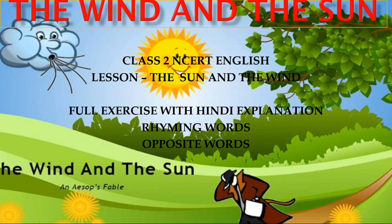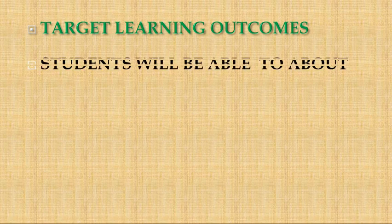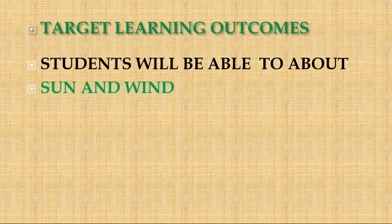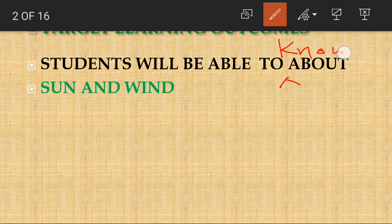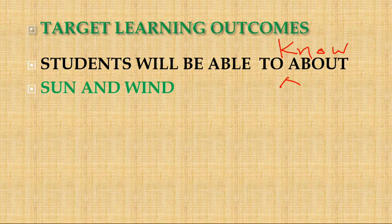The Wind and the Sun — this is the lesson of Class 2 NCERT English Unit 3. First of all we will do target learning outcomes. Target learning outcomes kya hai humare? Is lesson mein hume kya seekhne ko milega? First, students will be able to know about sun and wind — sun kya hota hai, wind kya hoti hai. S-U-N sun, W-I-N-D wind.